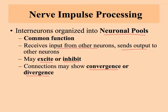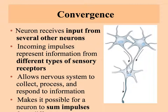The words we use are convergence or divergence. In convergence, a neuron is receiving input from several other neurons. It may be receiving information from different types of sensory receptors coming into an interneuron to have that information analyzed, processed, and a decision made as to what to do. This makes it possible for your nervous system to think about things on a greater level, and it allows a number of inputs to add together so that there is enough information to indicate it is time to do something.